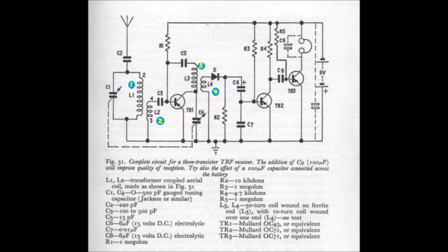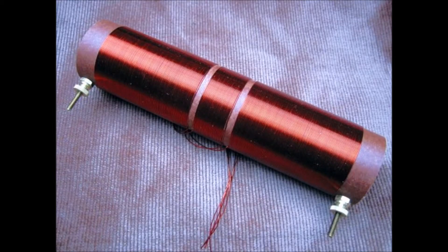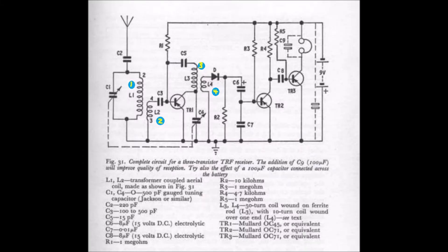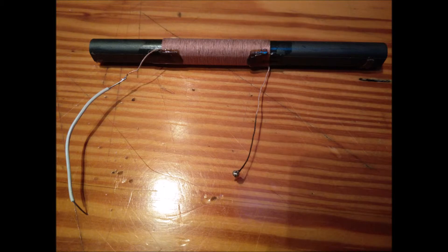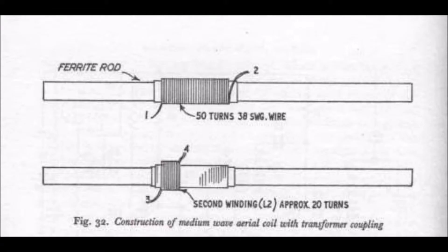The two coil pairs are transformer-wound, or inductively coupled, and different from the single winding we used previously for an aerial coil. Coil L1-L2 is wound on a 6-inch long, 3-eighths inch diameter ferrite rod, as shown in Figure 32.